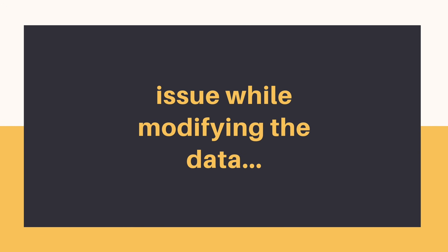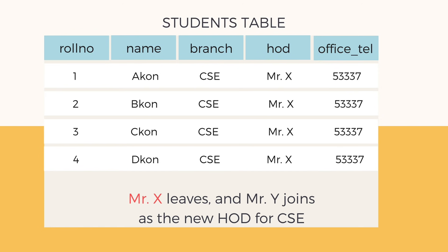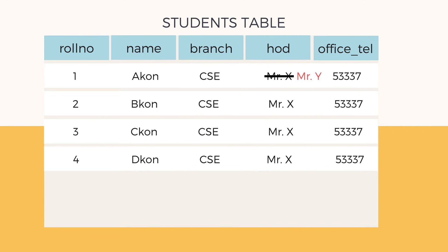Now let's see what updation anomaly or modification anomaly is. If the HOD leaves and the department gets a new HOD, the system administrator has to update all the student records with the new name of the HOD. This is modification anomaly because it is a huge amount of work. And during modification, if even a single row is missed out, it will lead to inconsistent data. Hence data redundancy can also lead to data inconsistency as a result of updation anomaly.